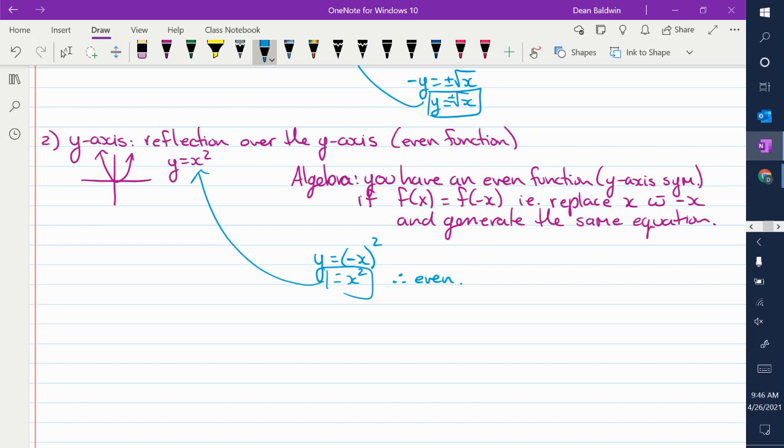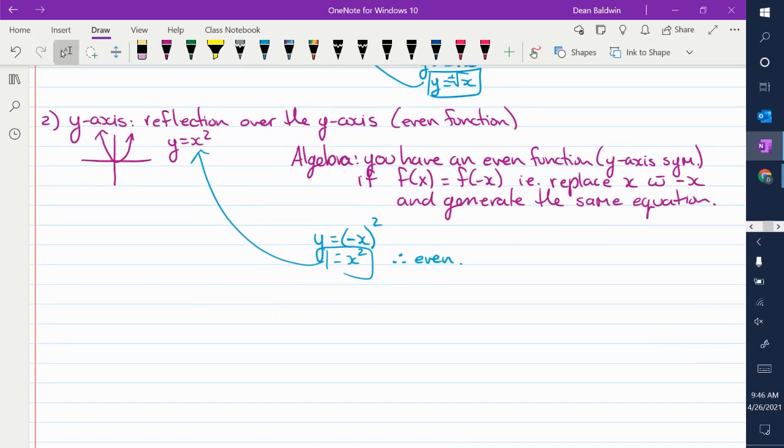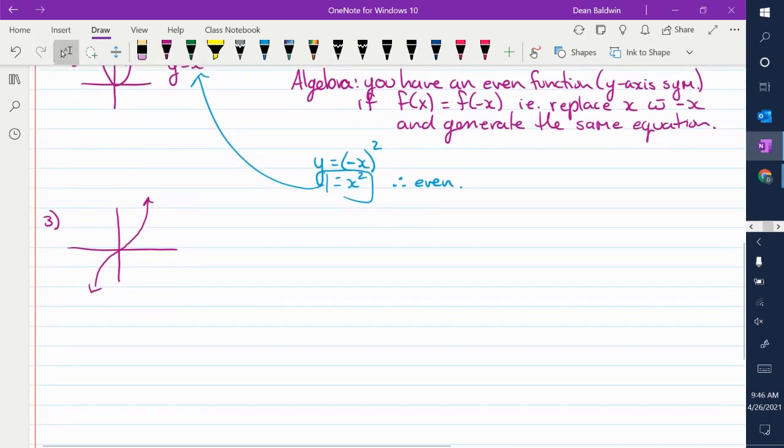And we'll do one at the end to test all of them, just an example to show you. So we've done x-axis, we've done y-axis. There's one other type of symmetry. Does anybody know what it is? I'll draw the graph, see if you can guess it. The basic graph. Anybody know what that graph is?